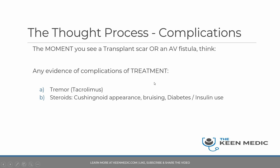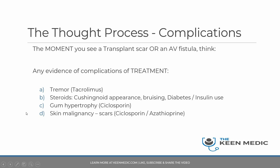Other complications include steroids, which can cause Cushingoid appearance, bruising, and secondary diabetes requiring insulin. Gum hypertrophy can be caused by cyclosporine — make sure you know other causes of gum hypertrophy as it is a typical PACES exam question. Finally, look for evidence of skin malignancies such as basal cell carcinomas, identified by unexplained excision scars on the skin in a renal transplant patient on immunosuppression.